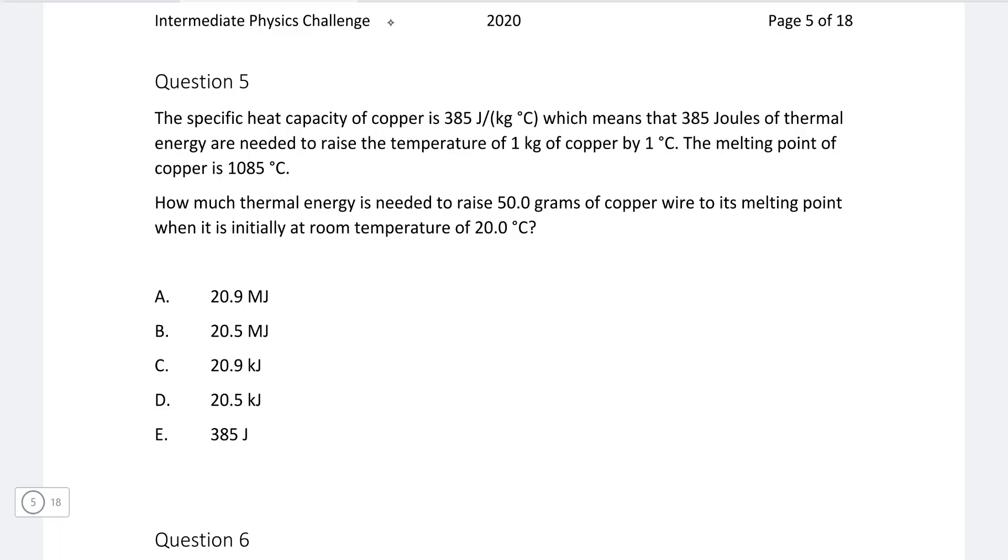Okay, so the equation that we're dealing with in this case is that E is equal to MC multiplied by our change in temperature. Now the mass in this equation is in kilograms, so to convert from grams to kilograms, because we're given 50 grams here, we'll have 50 divided by a thousand. We're going to multiply that by the specific heat capacity, which is 385, then by the change in temperature, which is equal to the final temperature, 1085 degrees Celsius, take away the initial one, which is 20. Putting that into a calculator, we're going to get 20,500 or so, and this means that the correct answer is D.